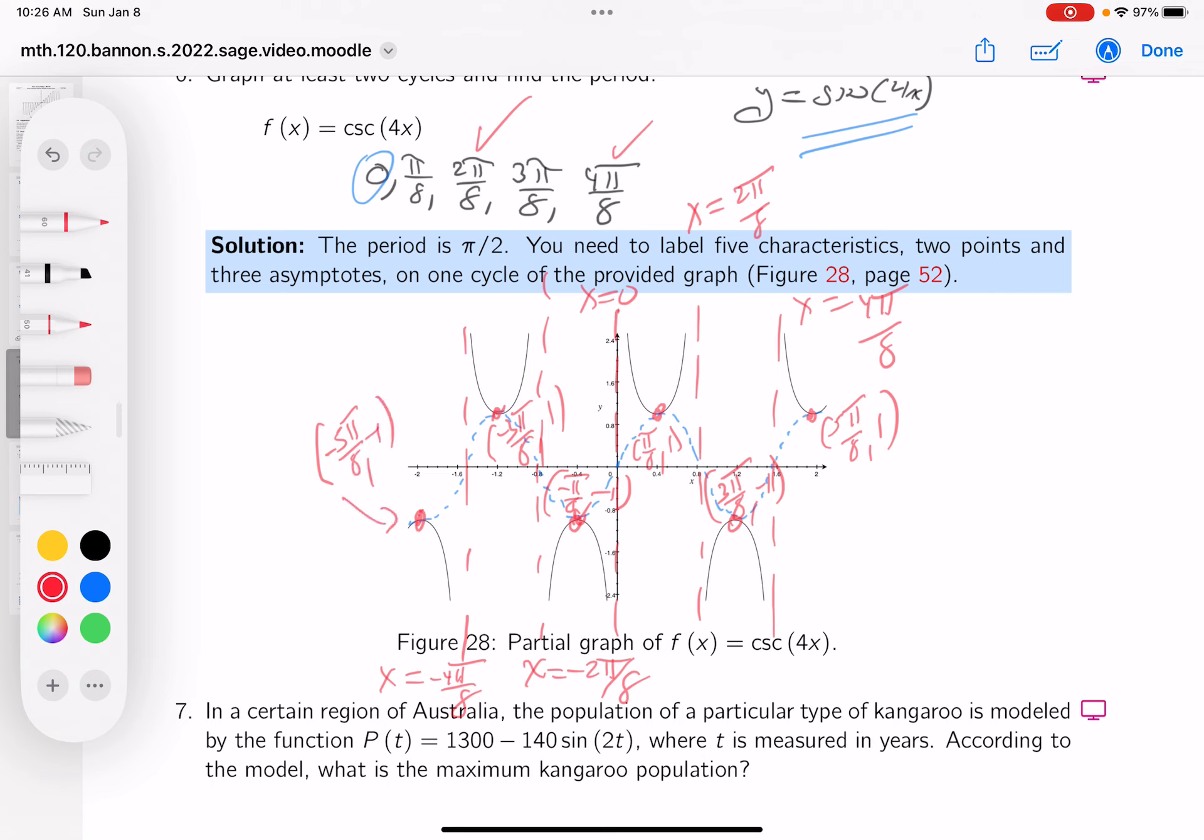Okay, so I think we're done with that. There's not really much else to say about that. Be clear about how we get those points though. We look at the sine function to do that because the cosecant is related to the sine function. Thank you.